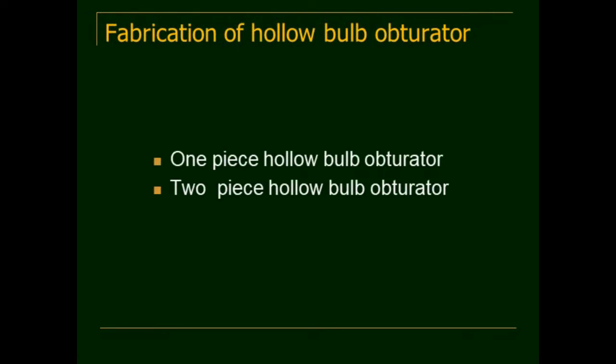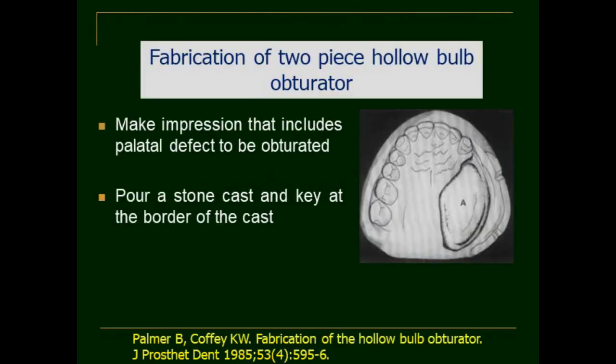Now coming to the fabrication of hollow bulb obturator. Review of literature reveals numerous methods. In this session, we will discuss some of the important classic methods. Basically there are two types: you can make it one piece — a one-piece hollow bulb obturator — or fabricate it as two pieces, that is the bulb part and the oral part separately and then join them. First we will discuss the fabrication of a two-piece hollow bulb obturator, which is Palmer's method.